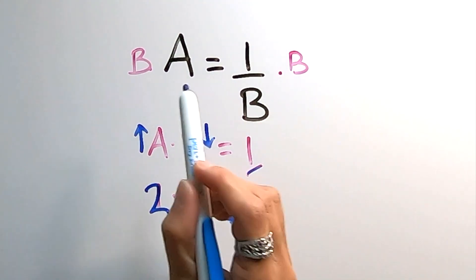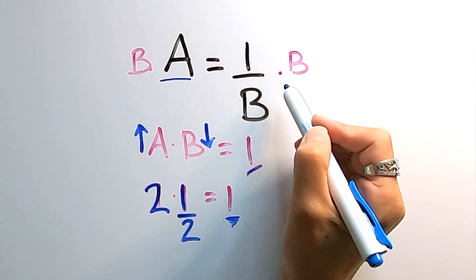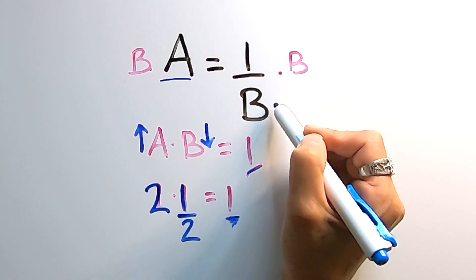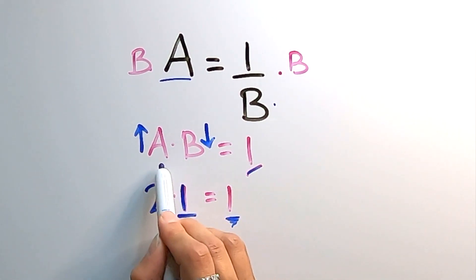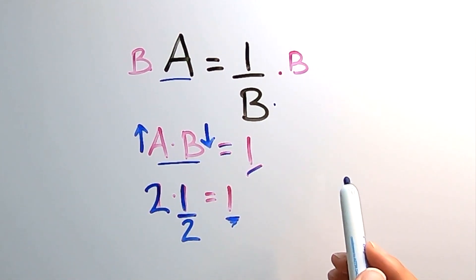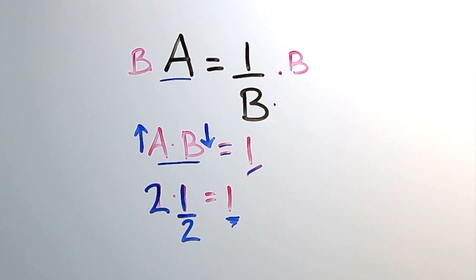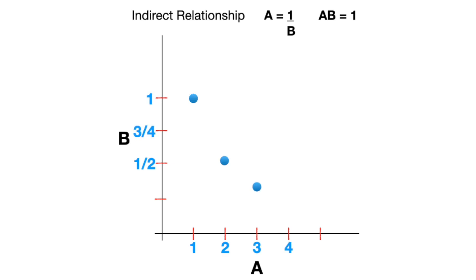If a variable on one side of the equal sign is in the numerator and the variable on the other side is in the denominator, or if they are next to each other — both in the numerator or both in the denominator on one side of the equal sign — they are indirectly related to each other. Graphically, with an indirect relationship where a equals 1 over b, or a times b equals 1, you can see that as a increases, b decreases, giving us a negative slope curved graph.